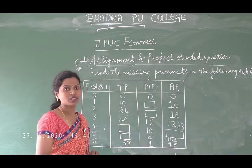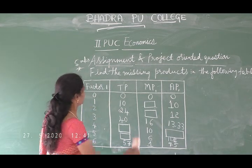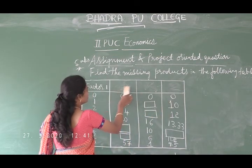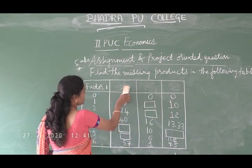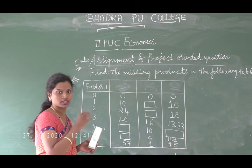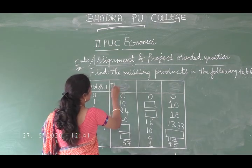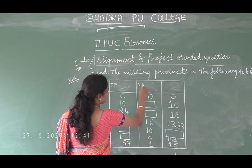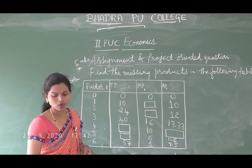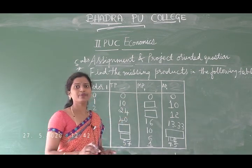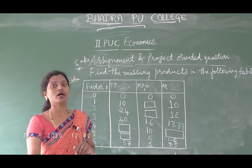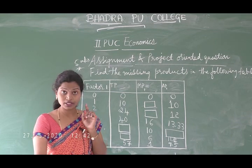We know the formulas. Marginal product: MP(L) = TP(L) − TP(L−1). Total product: TP = sum of MP. Average product: AP = TP / L, where L is the number of units of the input factor.